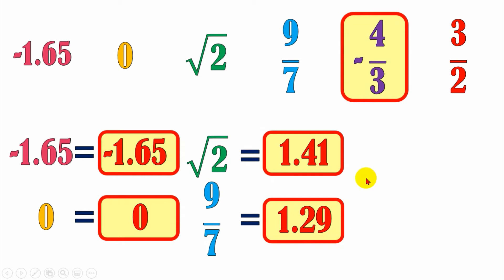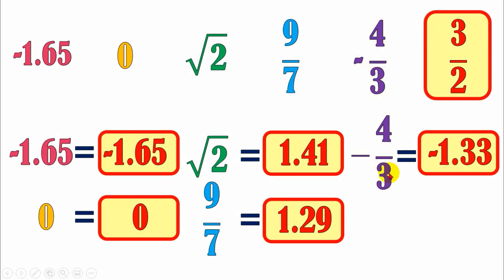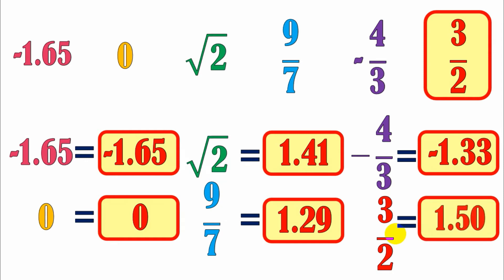Then next, let's have negative 4 out of 3. Negative 4 out of 3 is equal to what? Same scenario with 9 out of 7 — since this is a fraction, and fractions represent division, 4 divided by 3 is 1.33, only that this is negative. Then next, let's have 3 out of 2. Same scenario — 3 divided by 2 is equal to 1.5. I just added a zero here, so it becomes 1.50, and it doesn't change the fact that 1.5 is the same as 1.50.